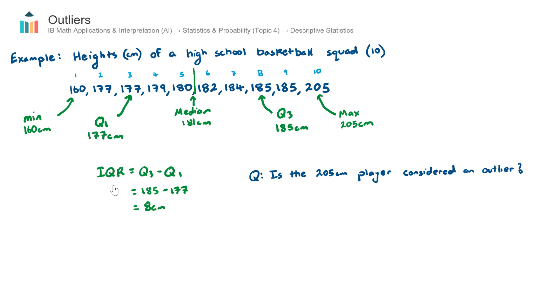So just to recap we have a 10 player basketball squad, high school basketball squad, and their heights here. So the first player was quite short, 160 centimeters.